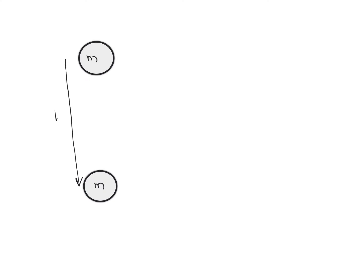Assume an object of mass m is dropped from height h. After travelling a distance h downward, this object attains a particular velocity v. Its initial velocity is equal to zero, and we need to find the value of its velocity at that instant.